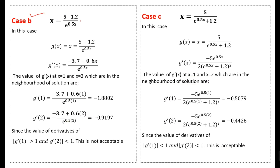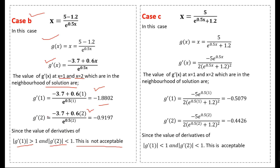In Case 2 we rewrite the equation in another form, giving a different g(x) and its derivative. Computing |g'(x)| at x = 1 and x = 2, the value at x = 1 is greater than 1 while at x = 2 it is less than 1. Since the condition must hold throughout the neighborhood, this case is also not acceptable.